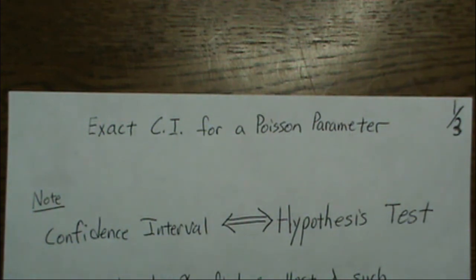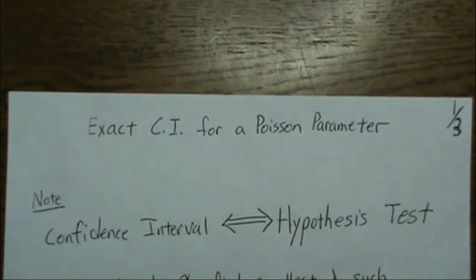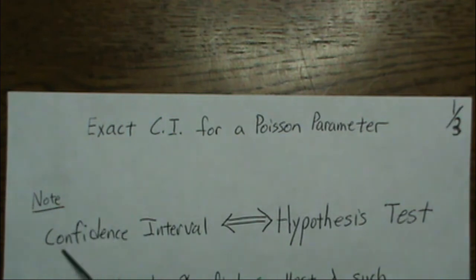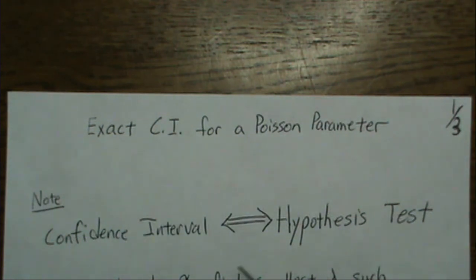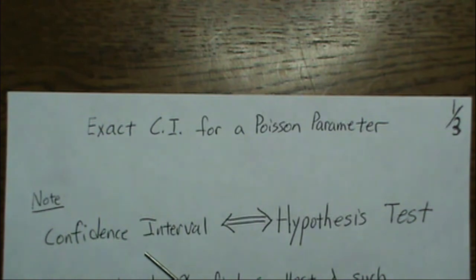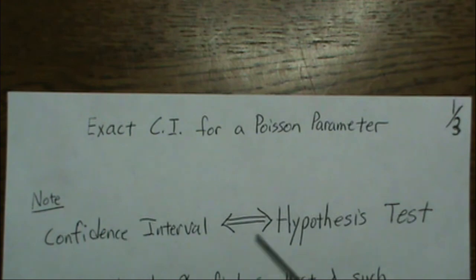In this video we want to find the exact confidence intervals for a Poisson parameter. We're going to do it a couple different ways. One widely known note is that confidence intervals and hypothesis tests have a one-to-one relationship — the acceptance region for a hypothesis test is equivalent to a confidence interval given alpha. So we're going to use this hypothesis approach to find the confidence interval.